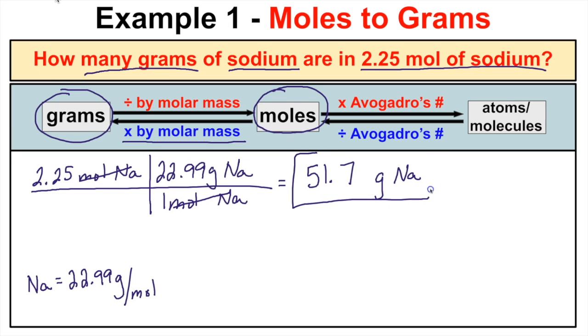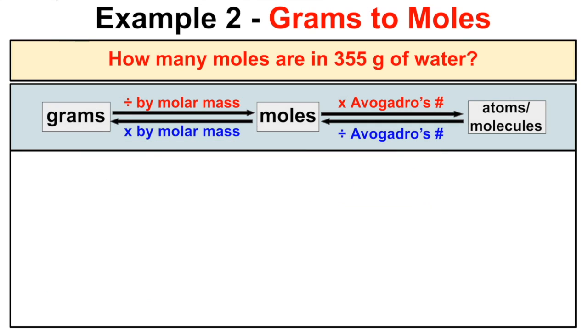So in this problem, if you have 2.25 moles of sodium, that is the same thing — it will have a mass of 51.7 grams. All right, let's take a look at another example.